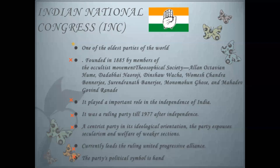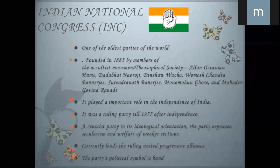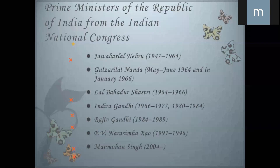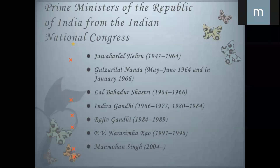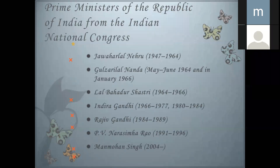Currently the party leads the United Progressive Alliance. In the central government, they make an alliance of different political parties and play an important role in the opposition. The most leading group in this United Progressive Alliance is the Congress party. The party symbol is the hand. Starting with Jawaharlal Nehru from 1947 to 1964.